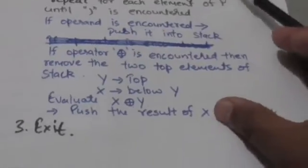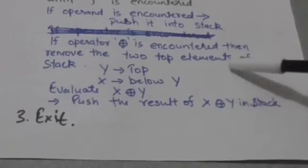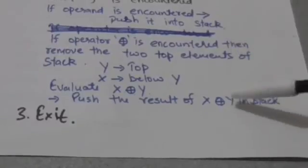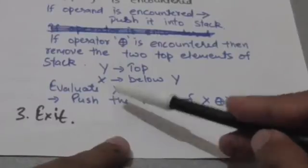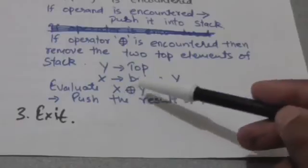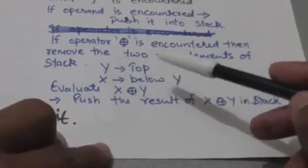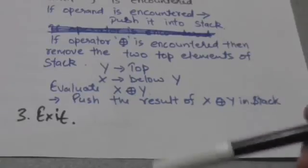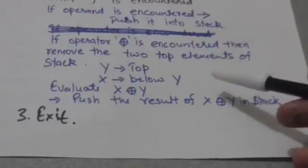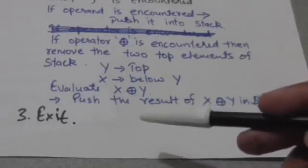If an operator is encountered, then the two top elements from the stack will be removed. If Y is the top element of the stack and X is below Y in the stack, then after removing Y and X from the stack, we will evaluate X operator Y — the expression corresponding to the operator symbol encountered — and push the result into the stack. When the right parenthesis is encountered, we will stop. The value of the top element of the stack is the required result.